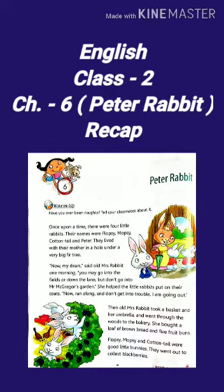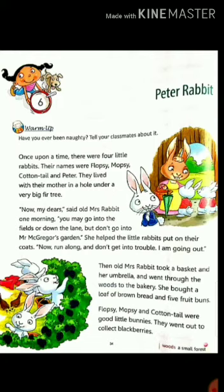In this chapter we read: once there were four little rabbits — Flopsy, Mopsy, Cottontail and Peter — who lived under a fir tree in a big forest.